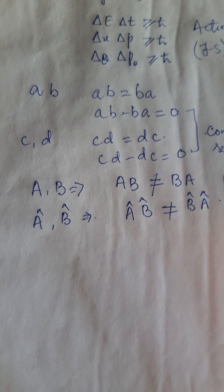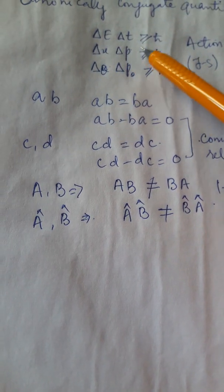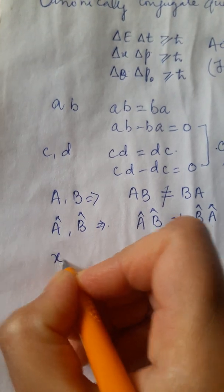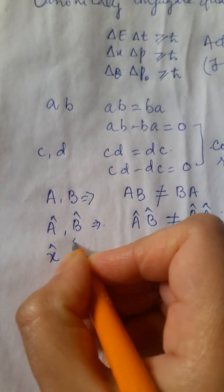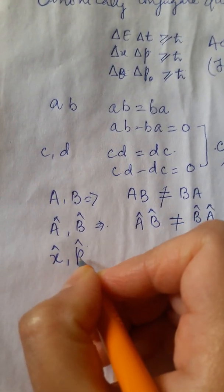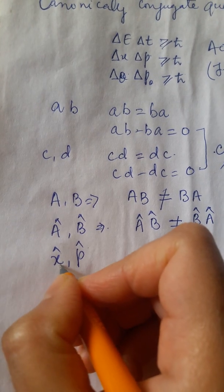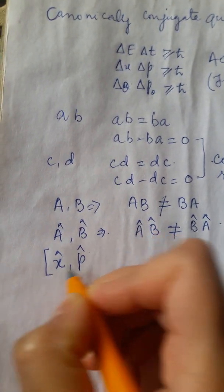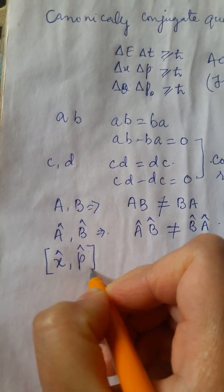Now, in order to understand that, let us pick up an example of that of position and momentum. So for two operators, X and P. Remember, I am putting a cap on X and a cap on P, which indicates that it's not a mere position, but the position operator. It's not a mere momentum, but a momentum operator.